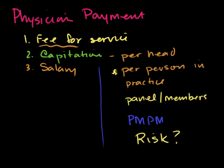Who decides whether it will be capitation or fee-for-service? It's been a negotiation back and forth. The Medicare program started in the 1960s when fee-for-service was most common, and that's largely persisted for historical reasons. In the 1990s, insurance companies in the private market decided to push more capitation arrangements, and were successful for a while. But more recently, physicians said they don't like capitation as well and would rather go back to fee-for-service, so the negotiation has shifted back the other way.